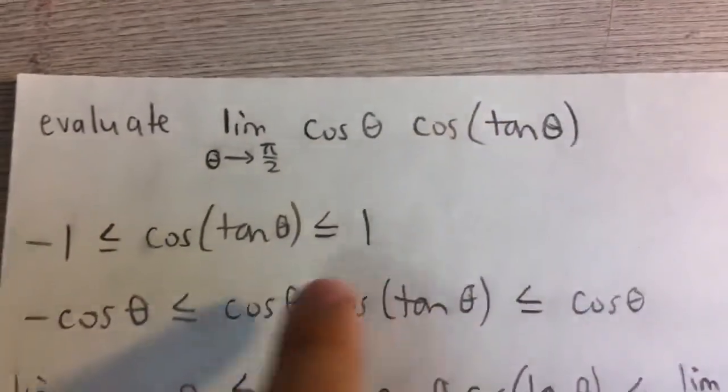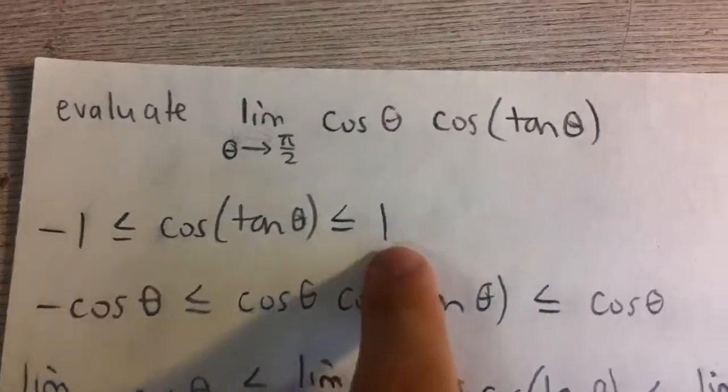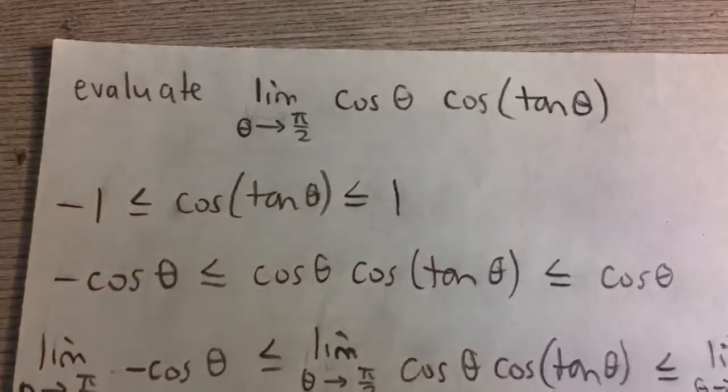So what we're going to do is recognize that the cosine of any angle, no matter what the value is inside, has to be greater than or equal to negative 1 and less than or equal to 1 in between this range of negative 1 and 1.